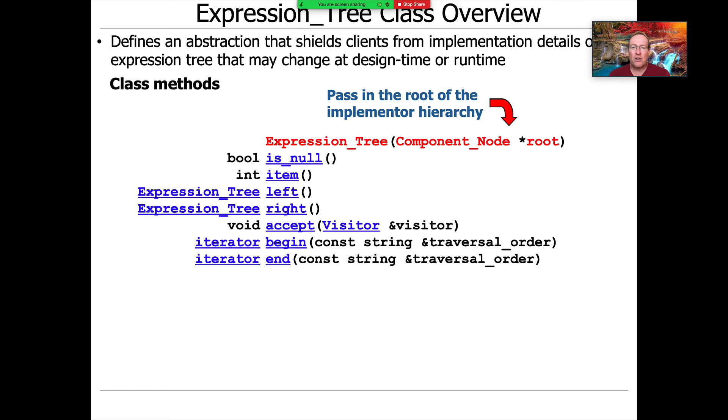Here's the constructor for the expression tree class. You can see that it's given a pointer to a component node, which is the root of an implementer hierarchy. That's going to get passed in and held by a reference-counted smart pointer internally, which we'll talk about later. That's how we connect the abstraction (the expression tree) with a composite which we built by some other means.